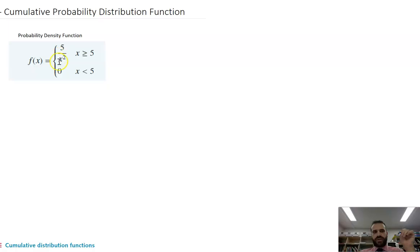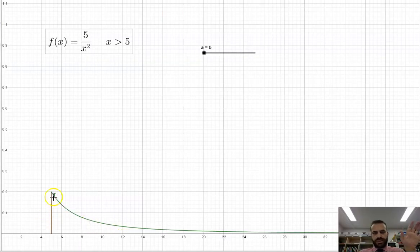F of x equals 5 on x squared when x is greater than or equal to 5. All right, so it's asymptotic because it goes on and on forever. Let's take a look at what that probability density function looks like. So it looks a little bit something like this. It starts at 5 and it goes on and on forever. Asymptotic goes off into there. So there's our function.